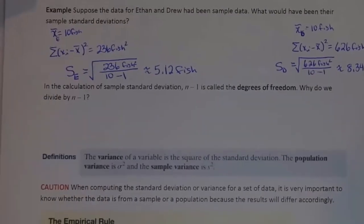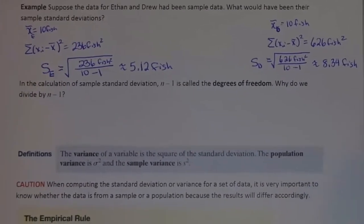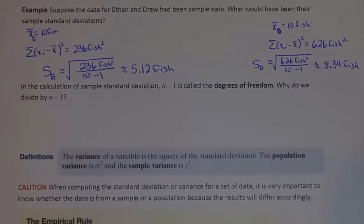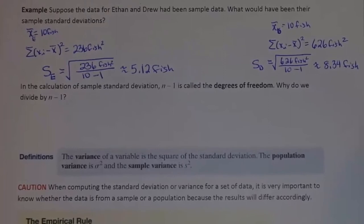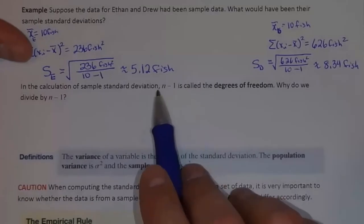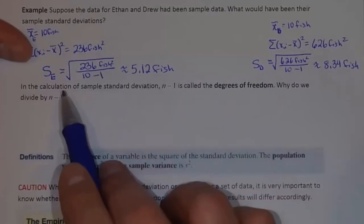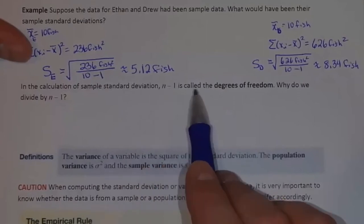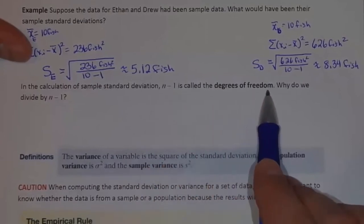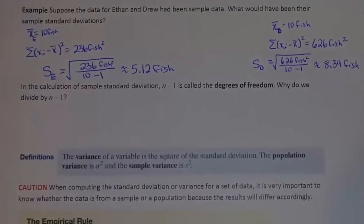That's sort of the unofficial reason why we are dividing by n minus 1: we are adjusting it intentionally to make it, as a general rule, more likely to be closer to what the true standard deviation of the population is. Now, the real reason is something called degrees of freedom. In the calculation of sample standard deviation, n minus 1 is called the degrees of freedom. We are dividing by n minus 1, the degrees of freedom, to adjust the standard deviation to be a little bigger than it would otherwise be.